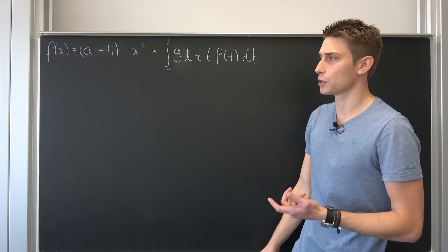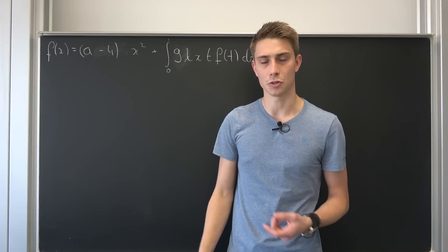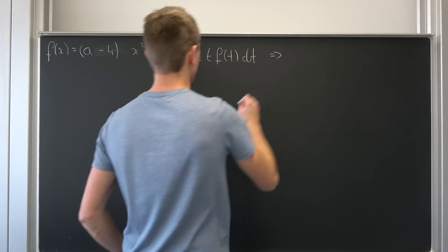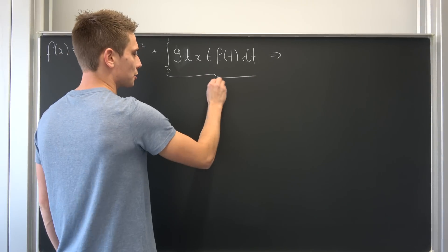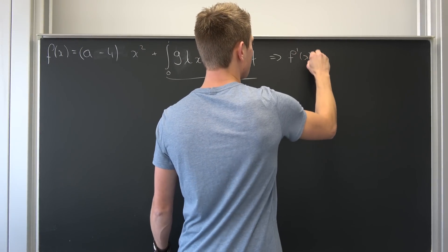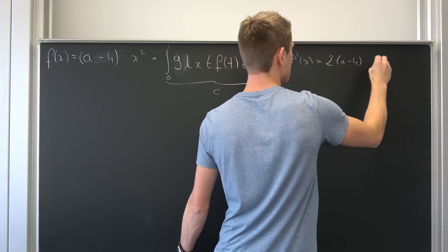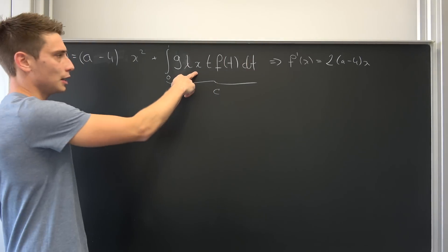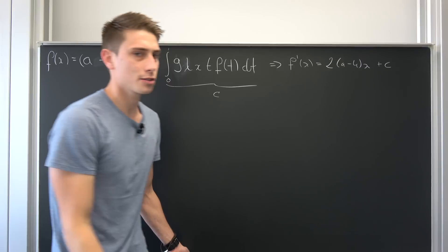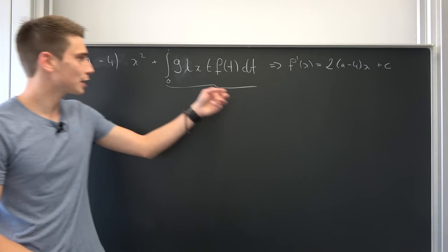How can we check if it's a quadratic equation? We could differentiate this and see if it turns into a polynomial of the first degree. This right here, by the fundamental theorem of calculus, is just some constant c. So if we differentiate f, we're going to end up with 2 times some constant a minus 4 times x, and x differentiated is just 1, so we end up with plus c.